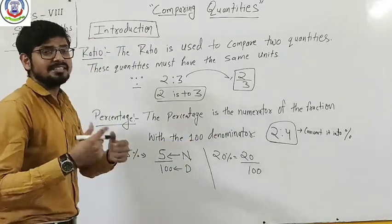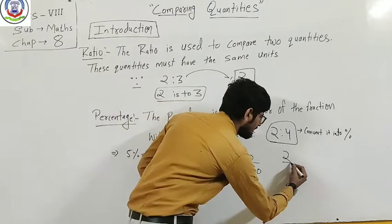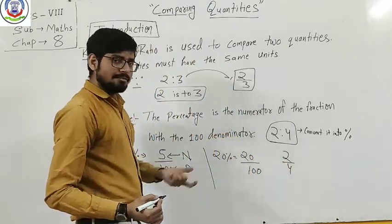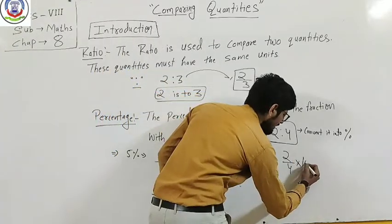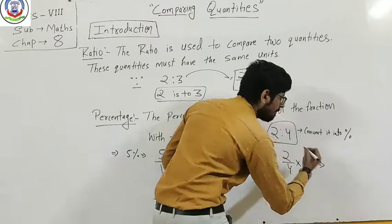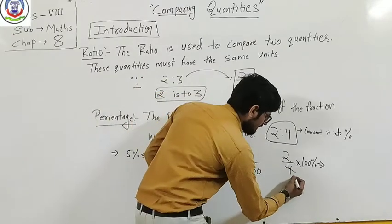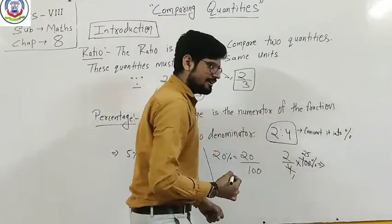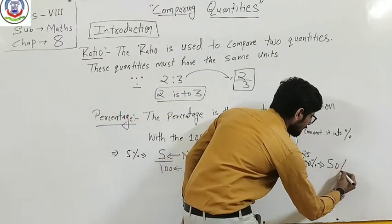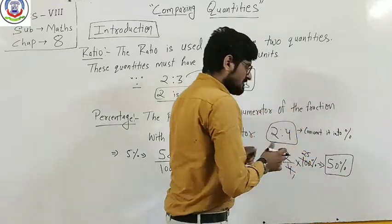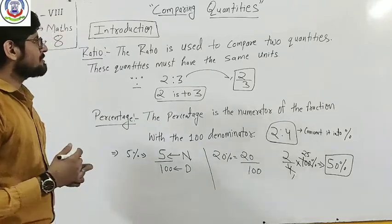To convert this ratio into percentage, we write the ratio in fraction form, 2 by 4, then multiply it by 100%. After canceling, 4 into 25 is 100, and 25 times 2 is 50%. This conversion from ratio to percentage you have seen before. Now we start exercise 8.1.